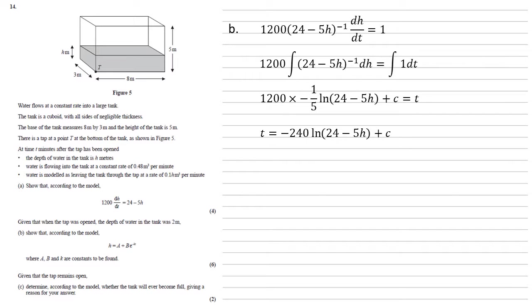We can now work out c because we're told that when the tap was opened, which is t equals zero, the depth of water h was two. So putting those two values in, we get that zero is equal to minus 240 ln of 24 minus 5 times 2, 10, all that's plus c. Well, the 24 minus 10 is 14. So c must equal 240 ln 14. This gives us that t is equal to minus 240 ln 24 minus 5h plus 240 ln 14.